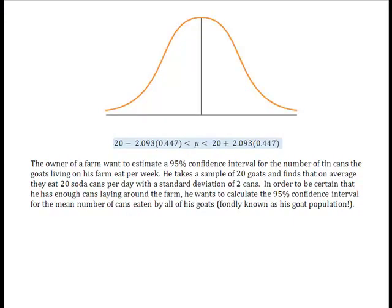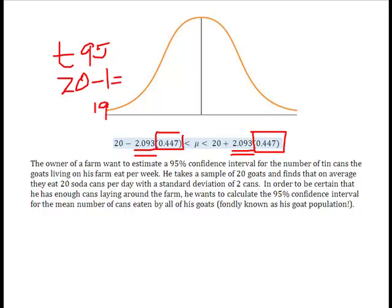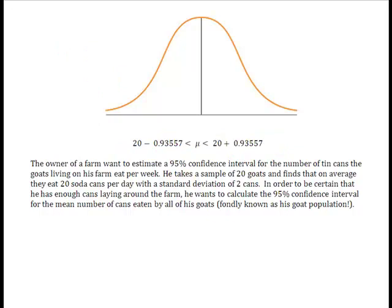Alright, all I've done now at this point is I simply took 2, 2 divided by the square root of 20, gave me the 0.447. I'm going to multiply it by the 2.093. Remember, that's the number that we got from the T distribution, 95% confidence interval, to 20 minus 1, my 19 degrees of freedom.